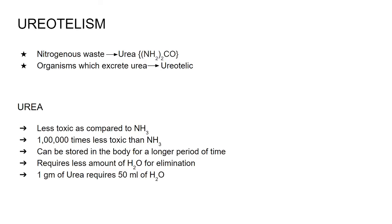The next type of nitrogenous waste is urea. We have already discussed ammonotelism. Now we'll talk about the second one, that is ureotelism. Ureotelism is the term given when the excretory nitrogenous waste is urea, and such organisms which excrete urea are known as ureotelic organisms.